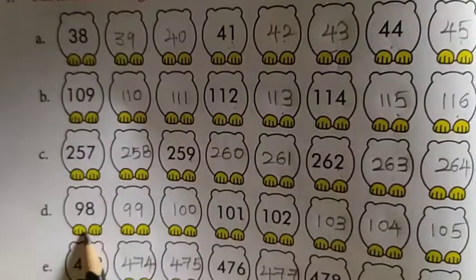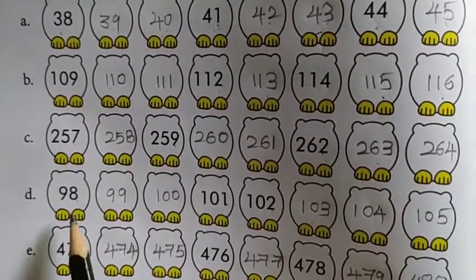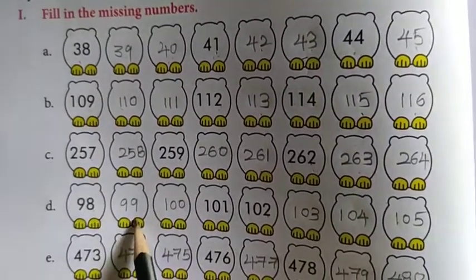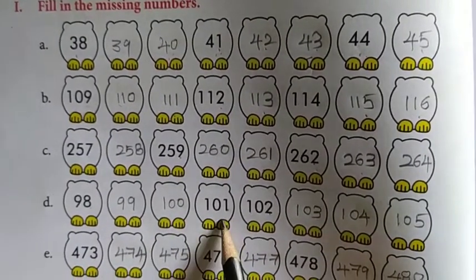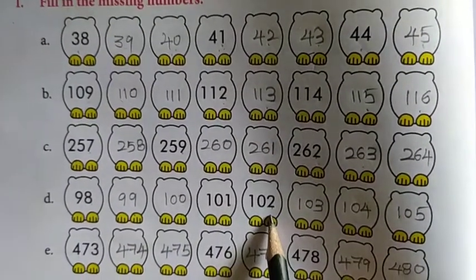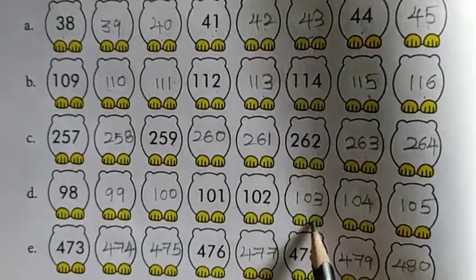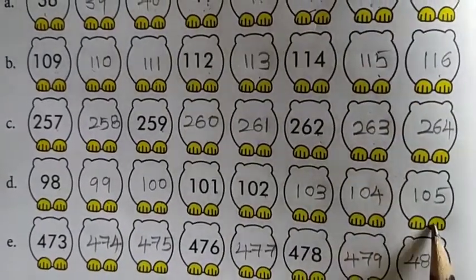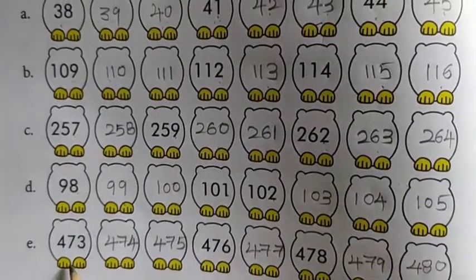Now we are going to 98, after number 99, next 100, next 101, next 102, after number 103, next 104, next 105. Now we are going to fifth line.